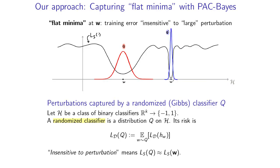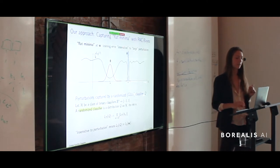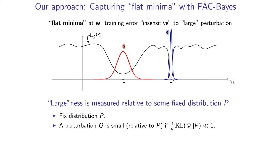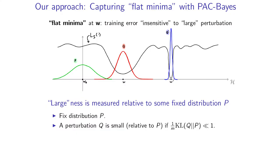For a sharper minimum, we can place another distribution Q prime, and you can see that you can perturb W prime a lot less before incurring too much additional risk. So this randomized classifier Q prime is a lot more sensitive to perturbations. We measure how large the perturbation is relative to some fixed prior distribution P. Our perturbation Q is small relative to P if the KL divergence between Q and P divided by M is small — much less than 1.